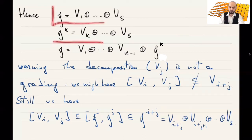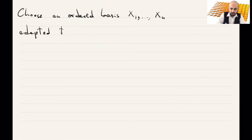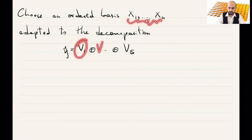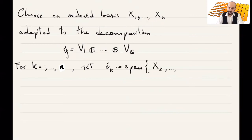So we have this decomposition of the space. We choose an ordered basis x₁, …, xₙ adapted to the decomposition G = V₁ ⊕ … ⊕ Vₛ. Namely, the first elements form a basis of V₁, the second group forms a basis of V₂, and so on. For each k, let's define the set Iₖ to be the span of the tail xₖ, …, xₙ.